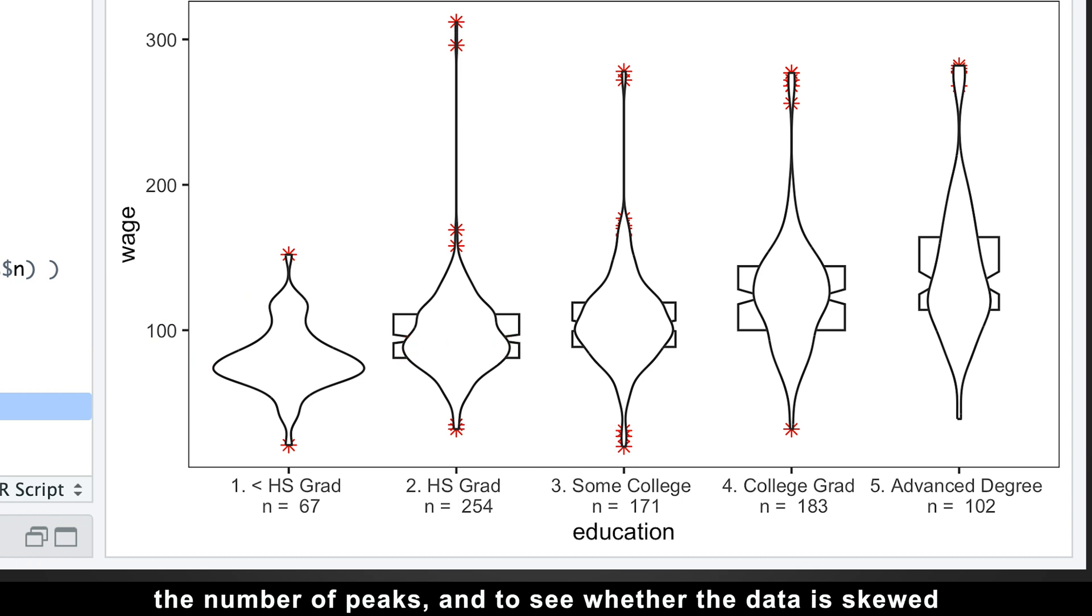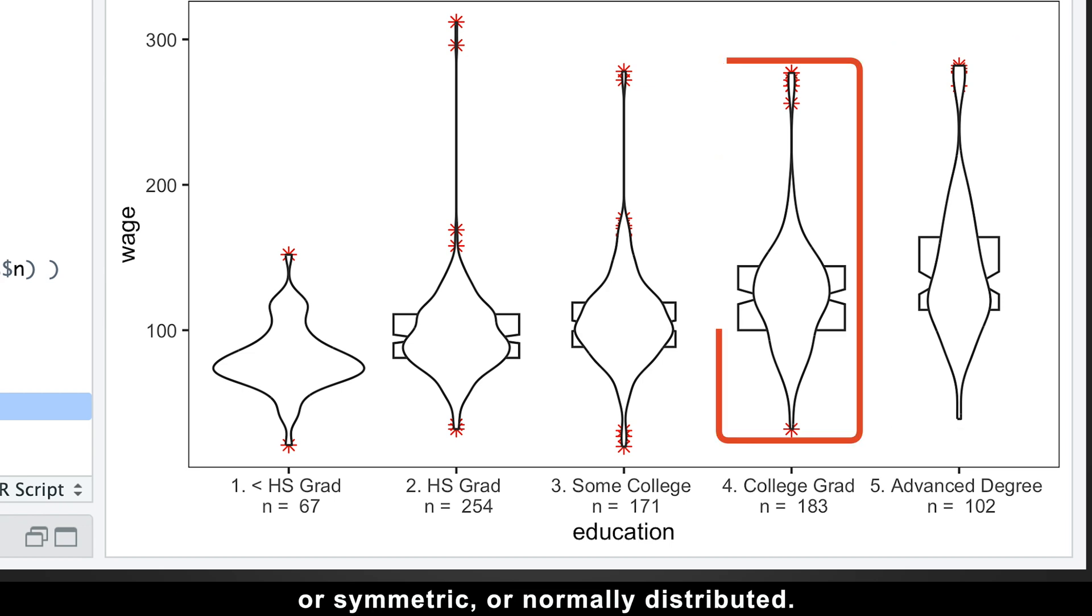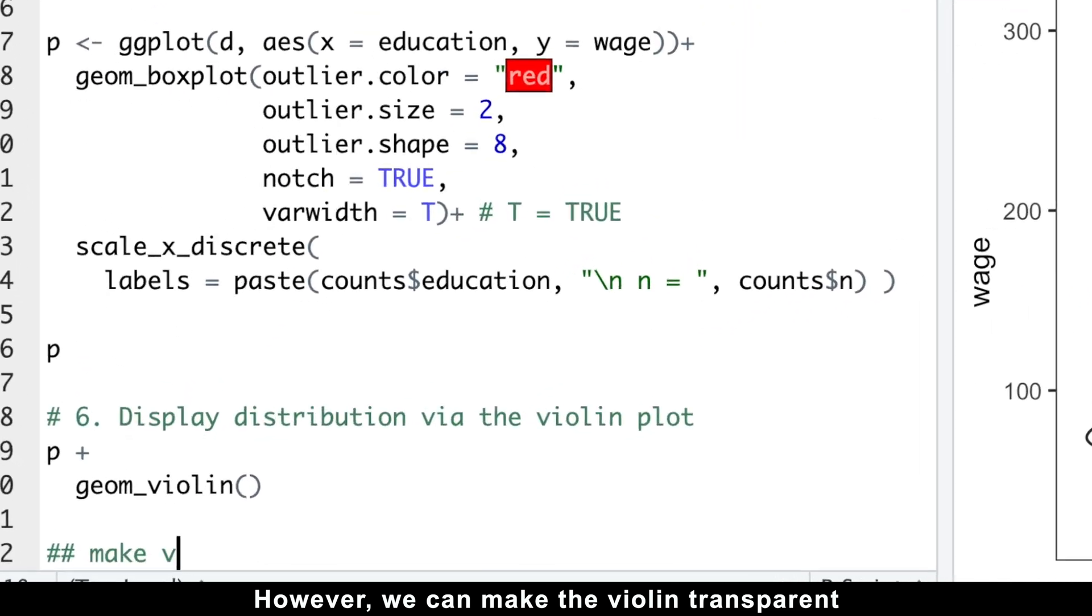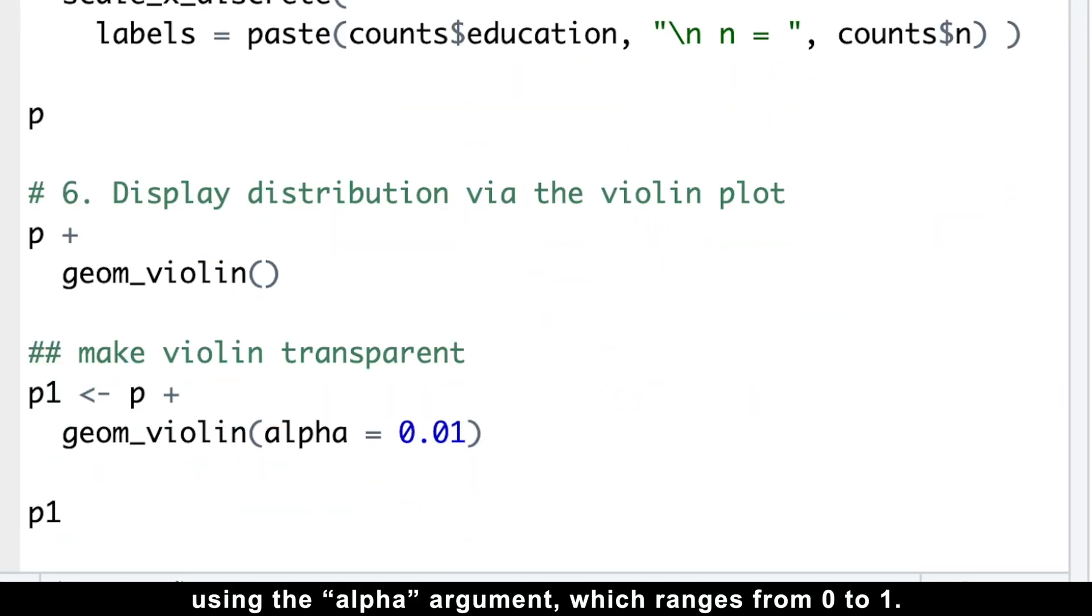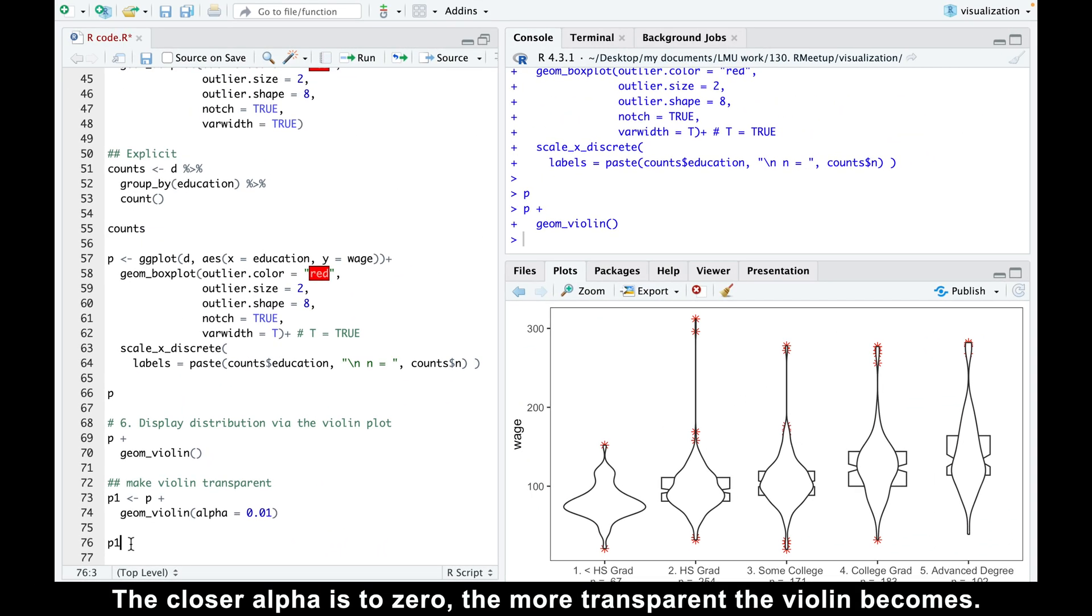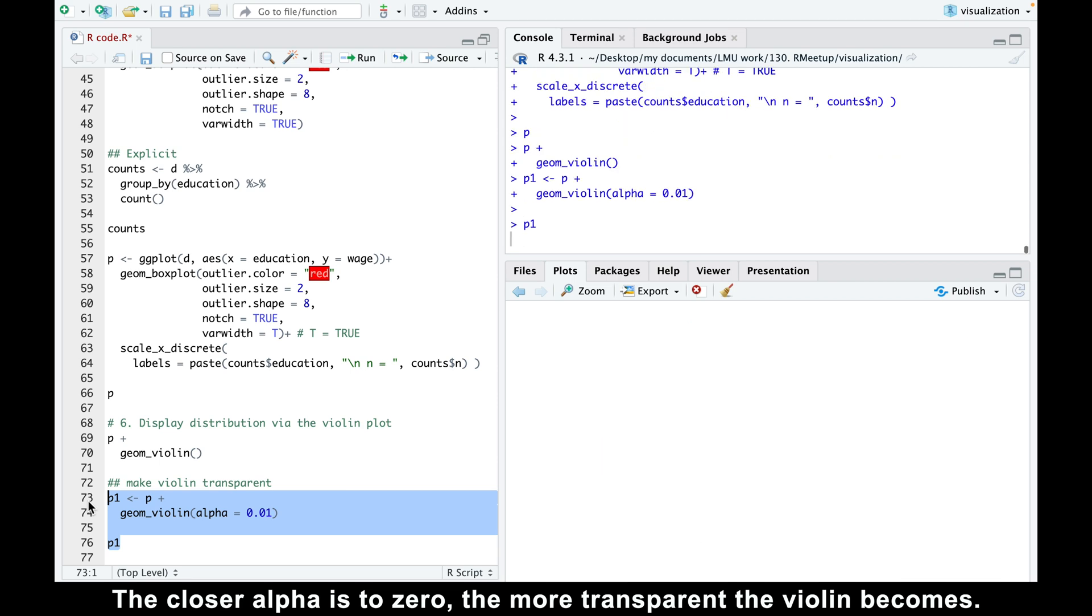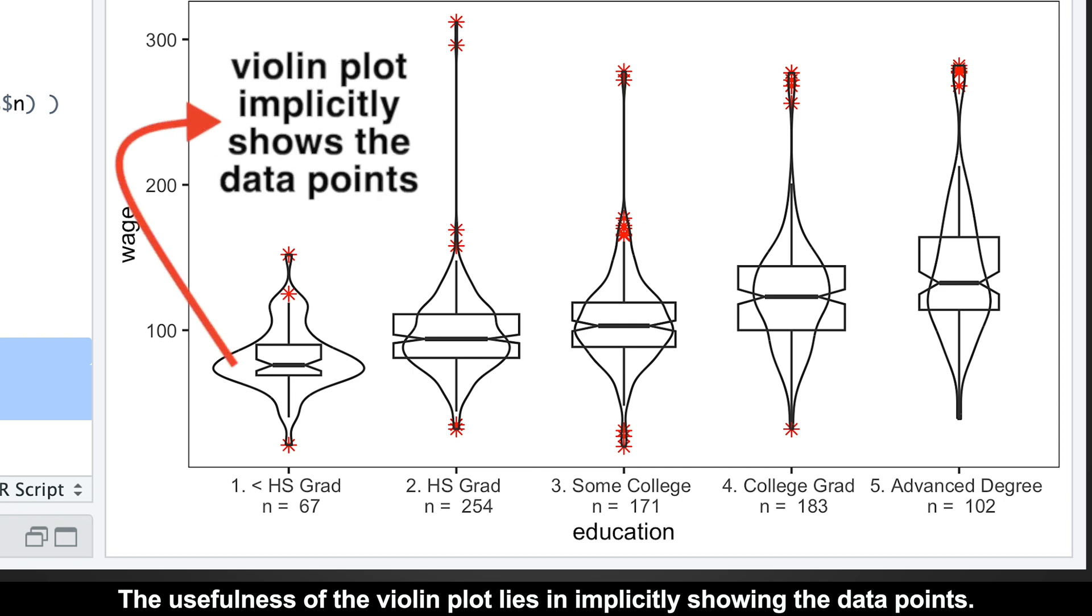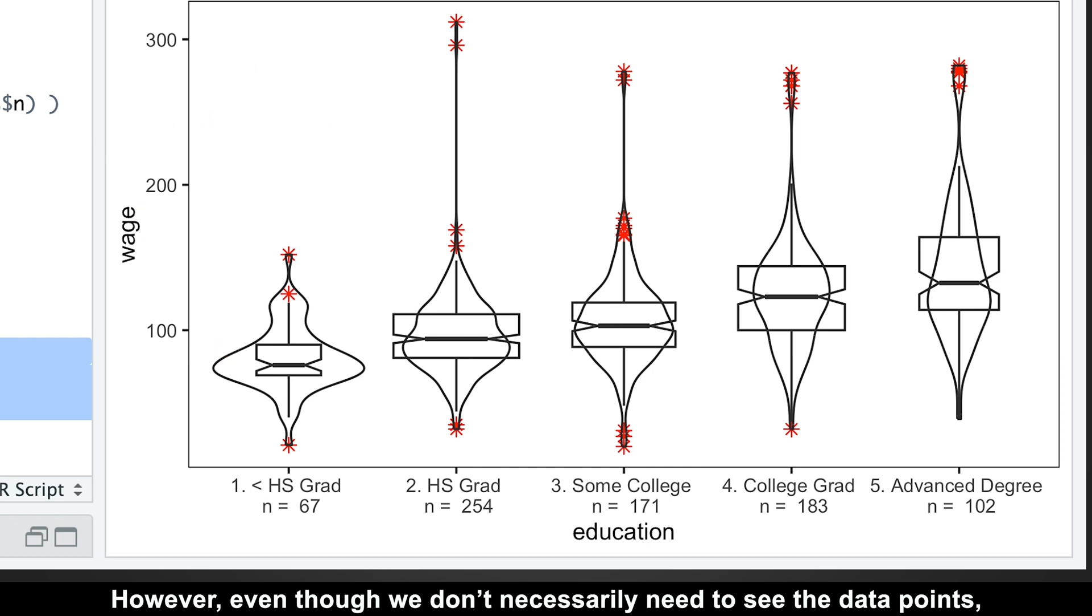If we overlay the violin on top of the boxplot, they would overlap. However, we can make the violin transparent using the alpha argument, which ranges from 0 to 1. The closer alpha is to 0, the more transparent the violin becomes. The usefulness of the violin plot lies in implicitly showing the data points. However, even though we don't necessarily need to see the data points, there are times when we still want to explicitly visualize them.